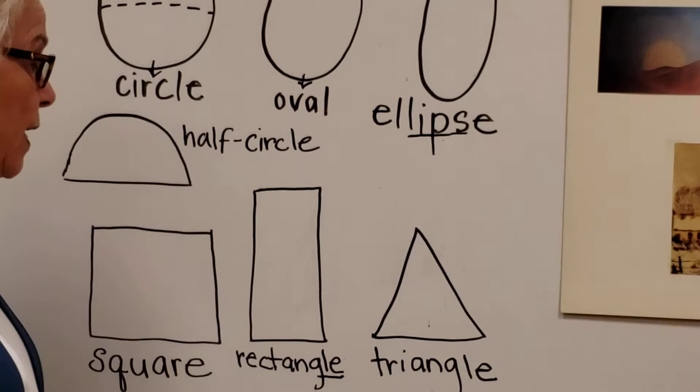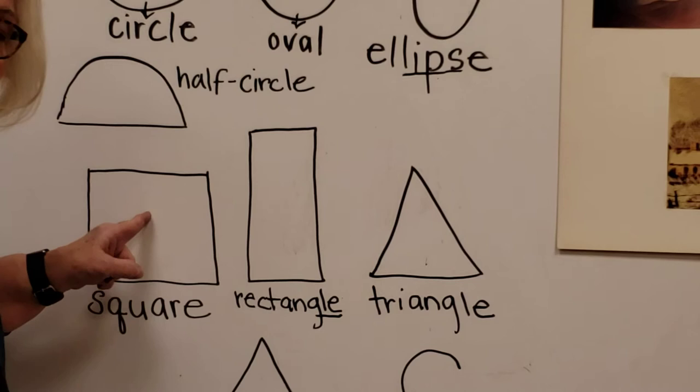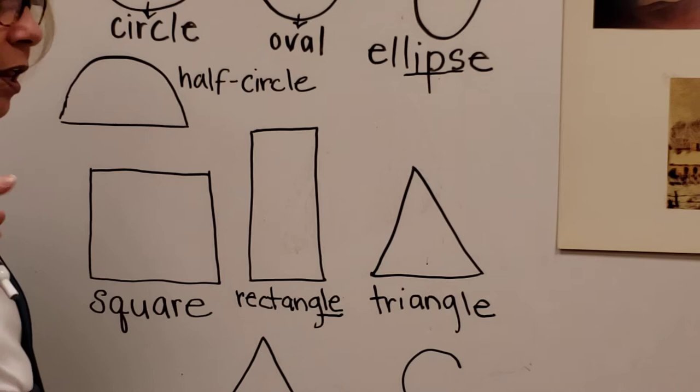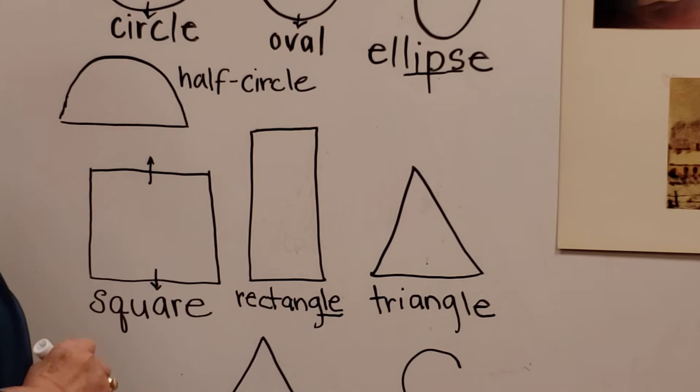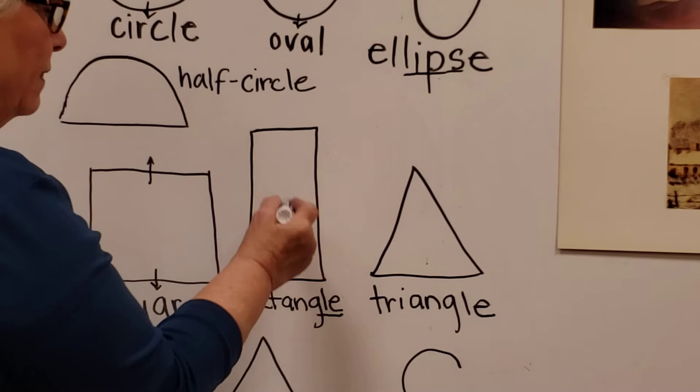The first one we want to look at is a square. That's when all the sides are exactly the same. Now you remember how we stretched out the circle? We're going to stretch out the square a little bit on the ends, and when we do that we have a rectangle, just like this.